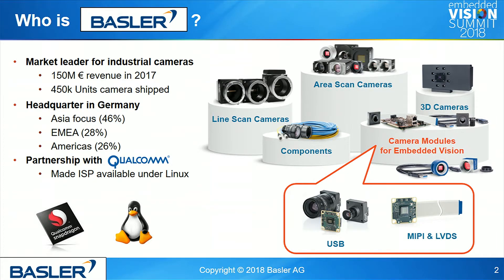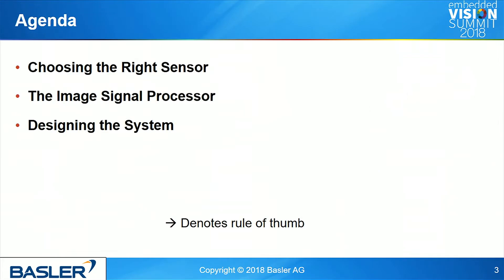That's the background I'm coming from. My talk has three parts: first, I'll guide you through how to choose the right sensor for your system; then I'll talk about the ISP, the image signal processor; and then I'll have some comments on overall system design. If you see this little arrow, it denotes a rule of thumb — so I won't be giving you mathematical truth, but a lot of experience-based rules of thumb.